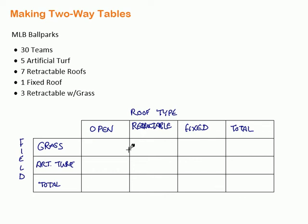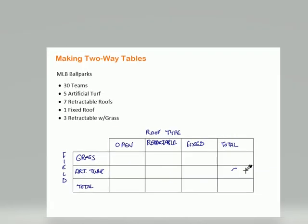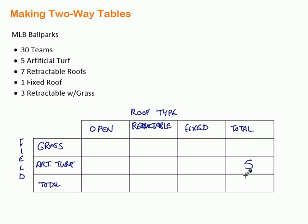Let's fill in this table. We know there are 30 total teams. Five of the ballparks have artificial turf — that's the row total for artificial turf, not broken down by roof type yet, so that goes in the total column. We have seven retractable roofs total, not necessarily grass or turf, just retractable — so that total goes in the retractable column total.